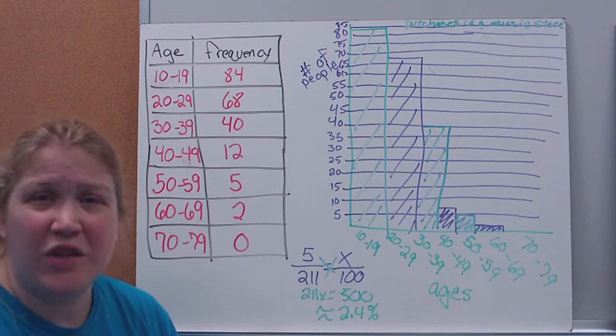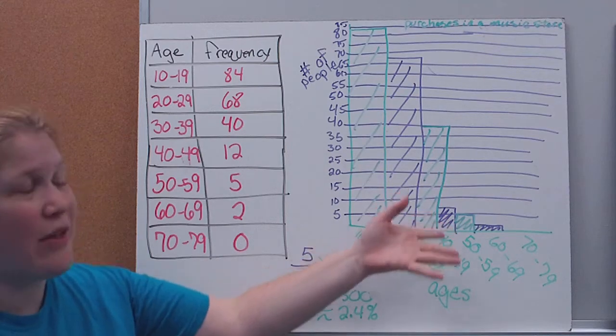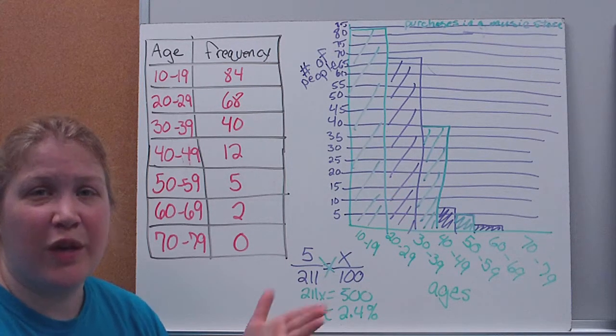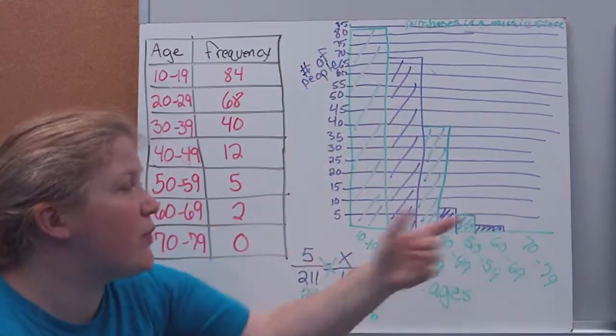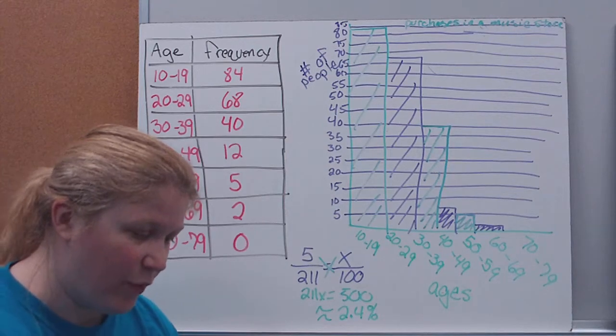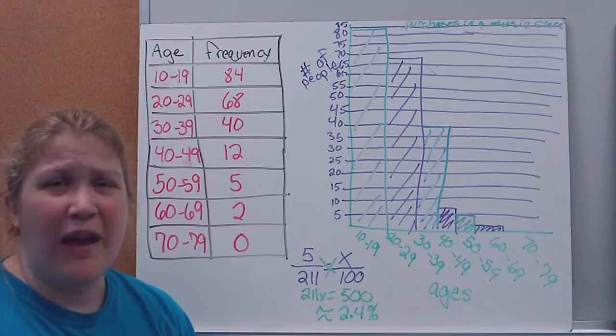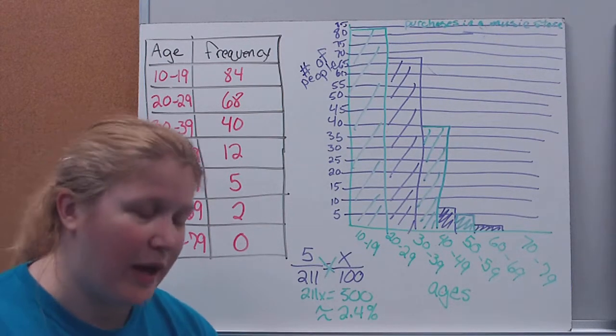The other question we can ask is, what is the range of the frequencies? And again, that might be easier to answer based on your table here rather than your histogram. Remember, range refers to the highest number minus the lowest. Our highest was 84. Our lowest was 0. So we have a range of 84. So there's a few other things that you can do with this. But it's, again, like any graph, it's just a visual way to kind of help you process the information and see what's going on.